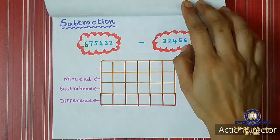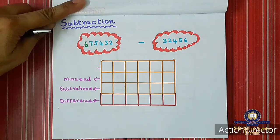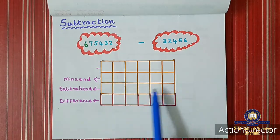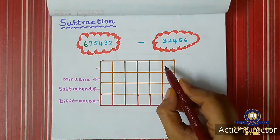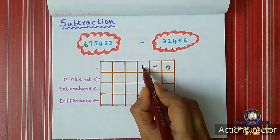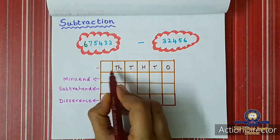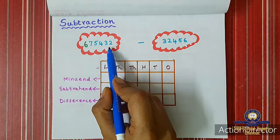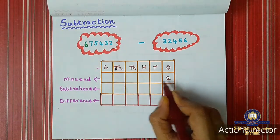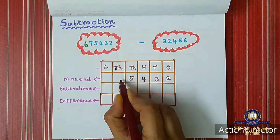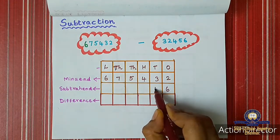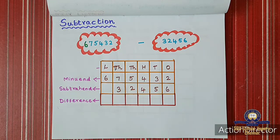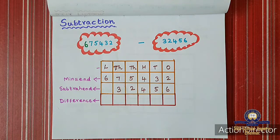Next one is subtraction. We have two numbers. We write the place values and the numbers, then find the answer. The place values are: ones, tens, hundreds, thousands, ten-thousands. Writing the first number starting from ones: 2, 3, 4, 5, 7, 6. Then the second number: 6, 5, 4, 2, 3.